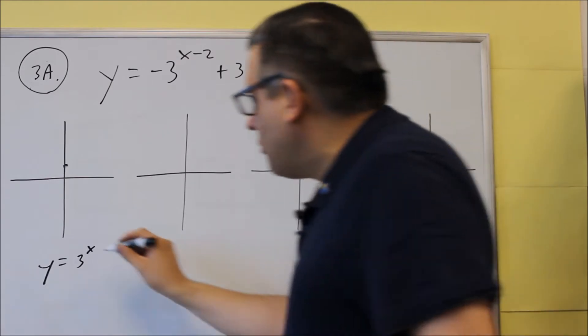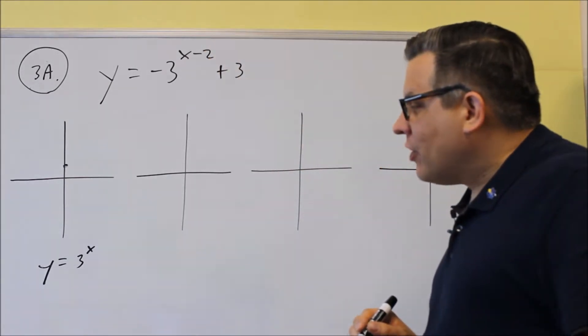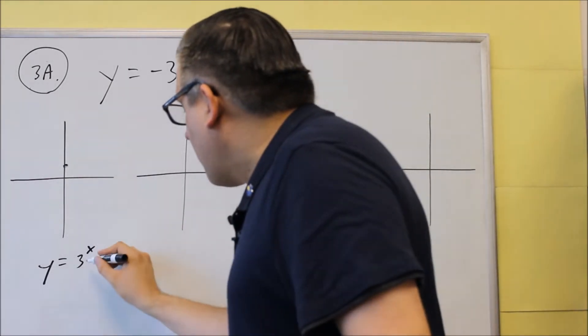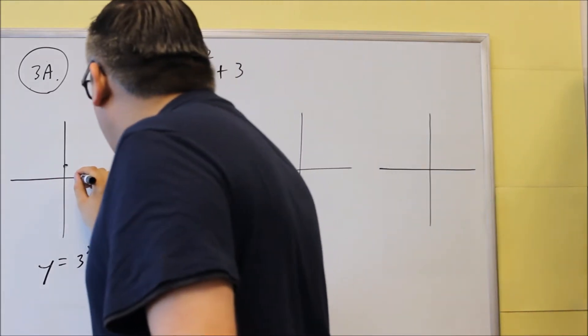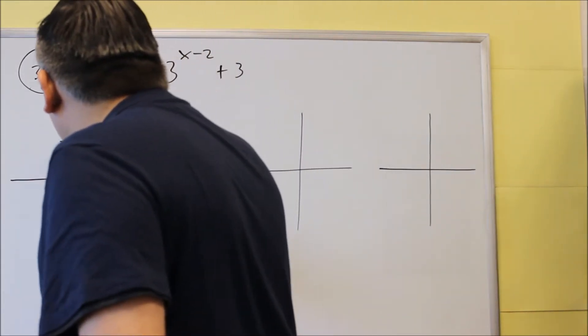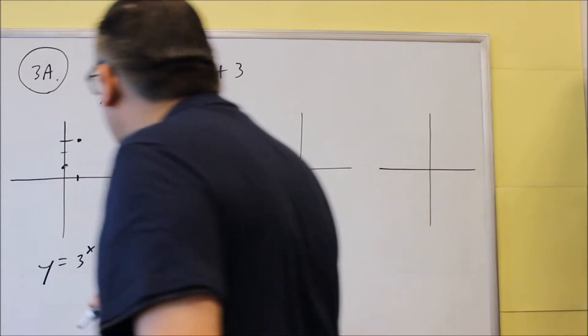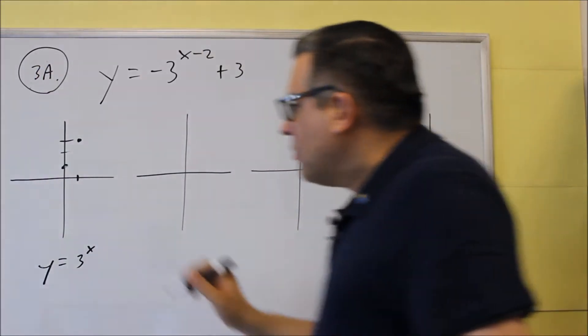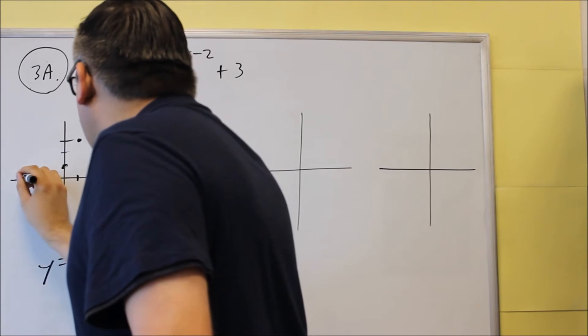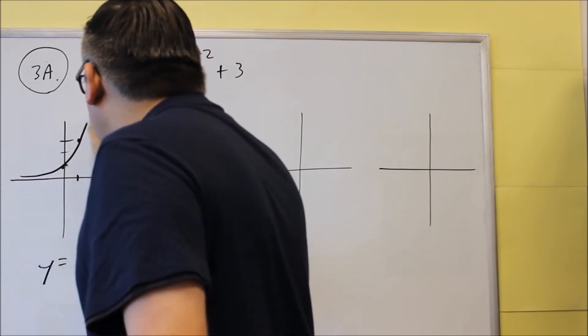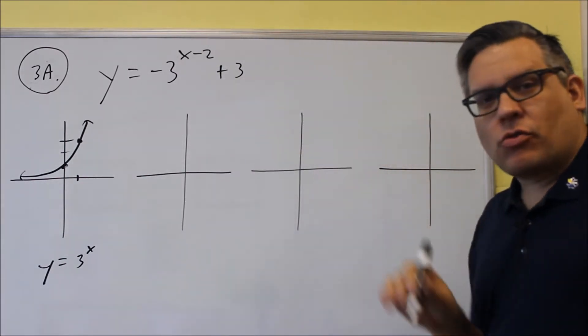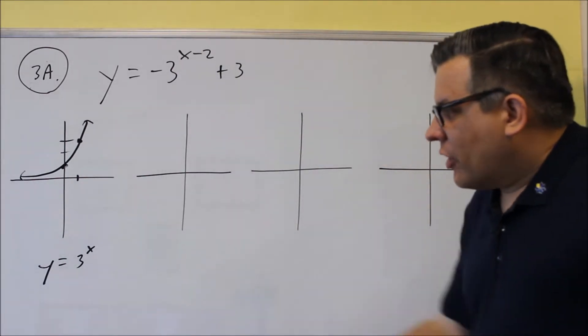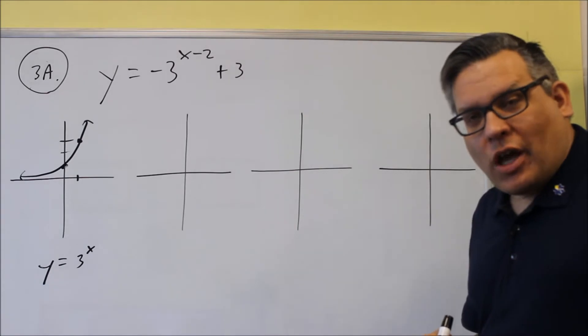And so for this one, if you put in a 0, 3 to the 0 is 1. Now another point it goes through is also going to be this one right here. It's going to go through 1, 3. So when I draw this in, it's going to basically look like this. And I have two main key points there that I can shift around and move. So that's the base graph, y equals 3 to the x.